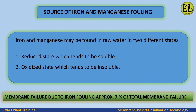Iron and manganese may be found in raw water in two different states: (1) the reduced state, which tends to be soluble, and (2) the oxidized state, which tends to be insoluble.